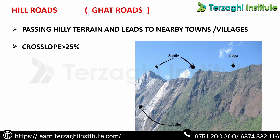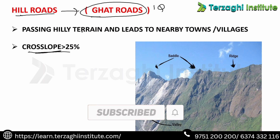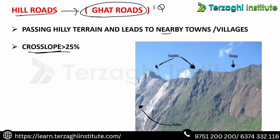Hill roads. We already have a path in the first unit. Hill roads is greater than 25% gradient terrain. Hill roads is also called Guard Roads — another name for Hill Roads is Guard Roads. This is one MCQ, so note here. The purpose of hill roads is to pass through hill terrain and lead to nearby towns and villages.